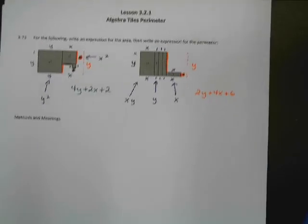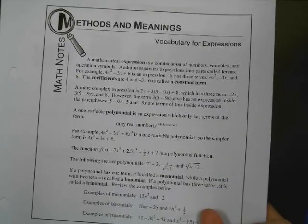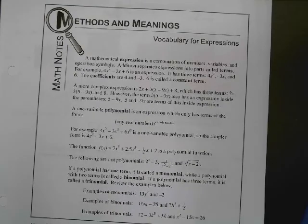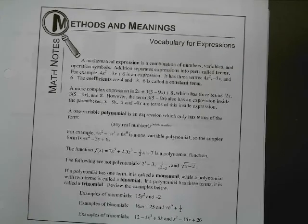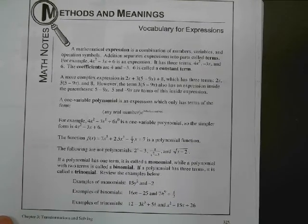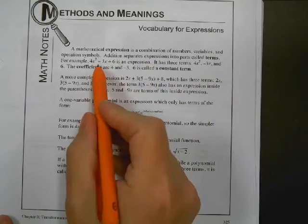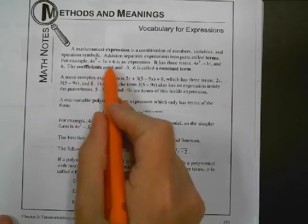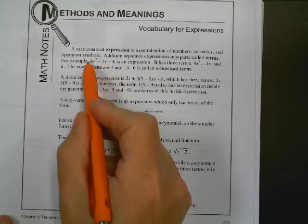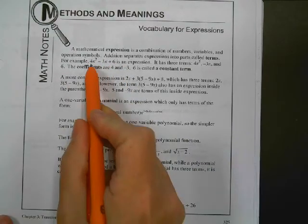We've got a methods and meaning section for this one. Methods and meaning is talking about expressions. Remember, an expression is when you don't have an equal sign. So it's just like one half of an equation. Anytime that we've got a plus or minus inside of an expression, so this is an expression, we call each one of these individual components a term. So this one has three terms.